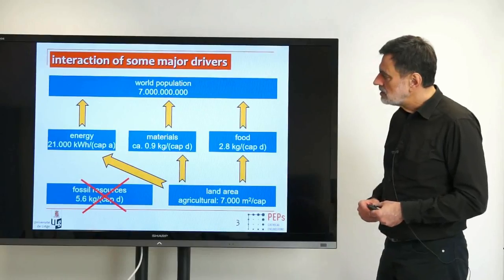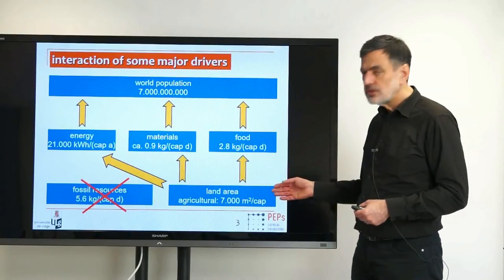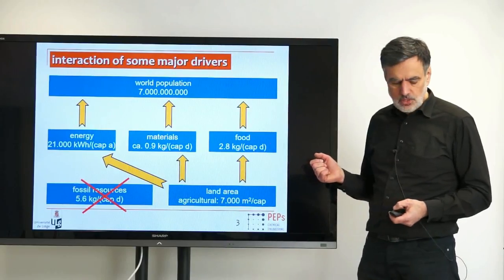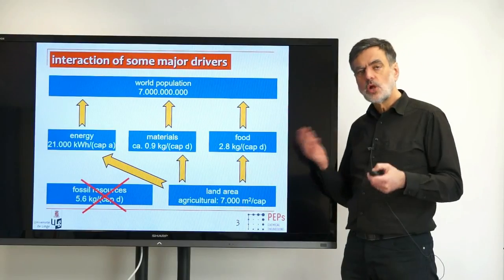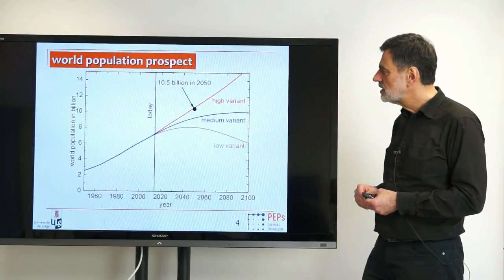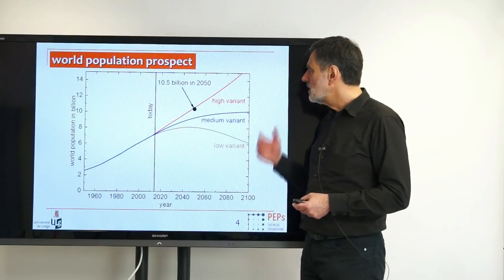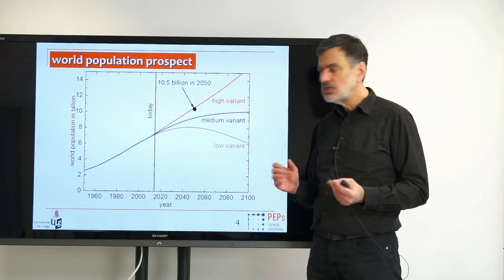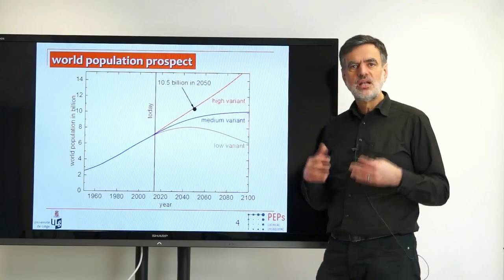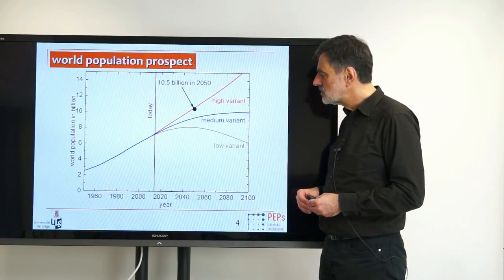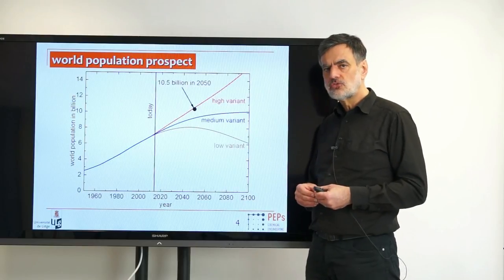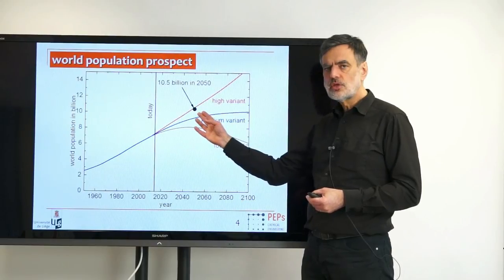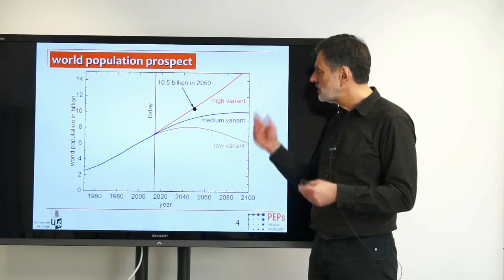I modeled these different influencing factors and looked at what happens in their interplay. For world population, the United Nations publish three variants — high, medium, and low — without specifying probabilities. I estimated from past data what would be expected for the future, and arrived at 10.5 billion in the year 2050 as a not-improbable value.